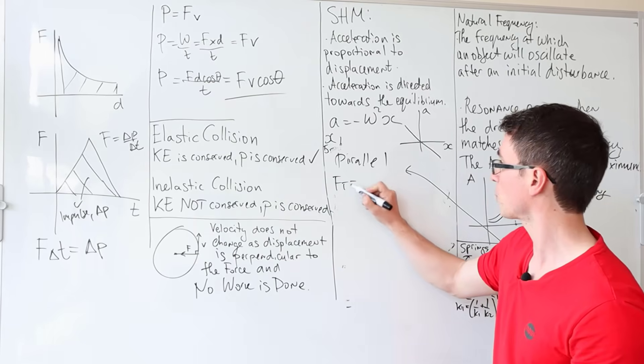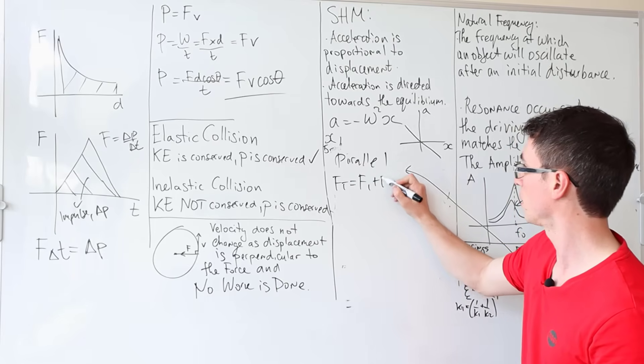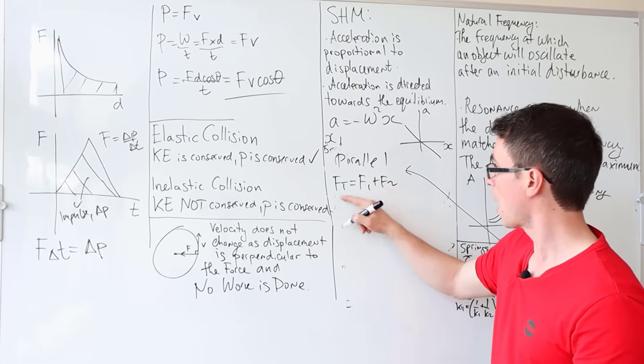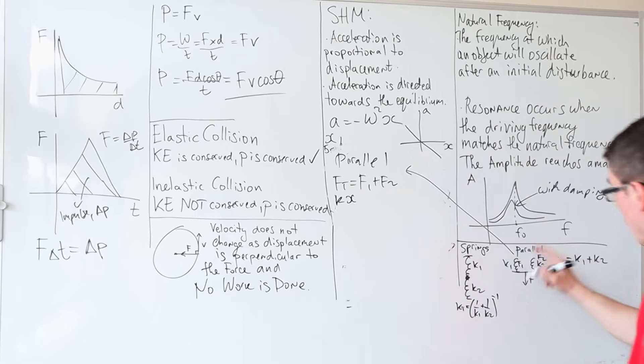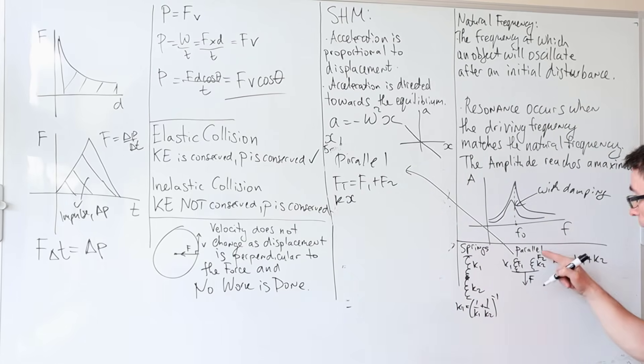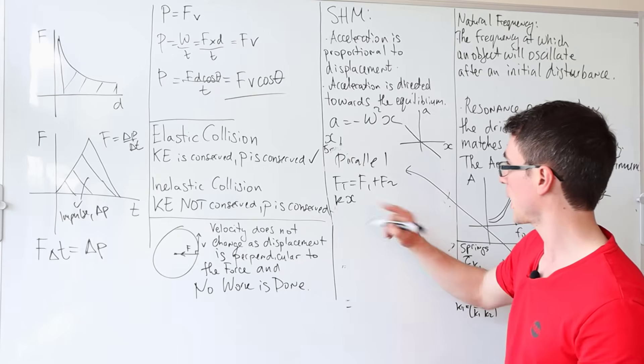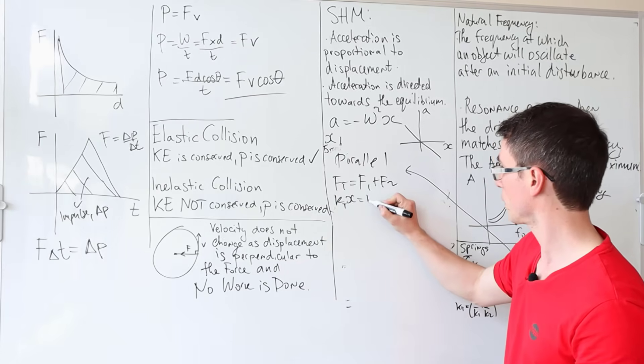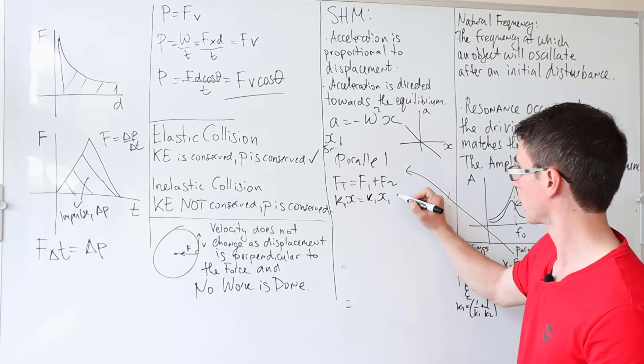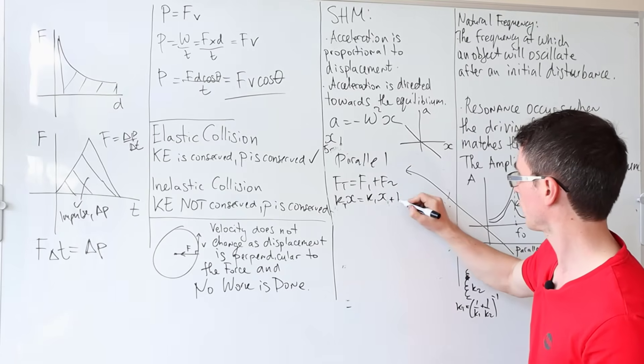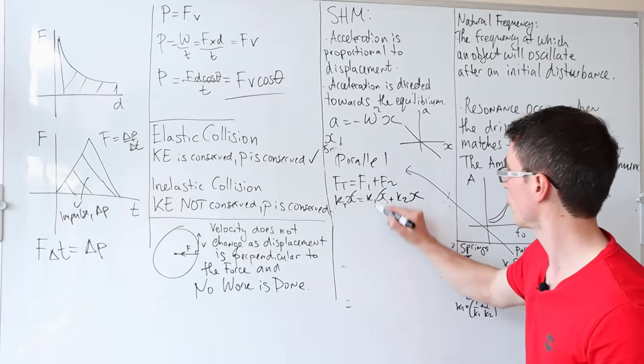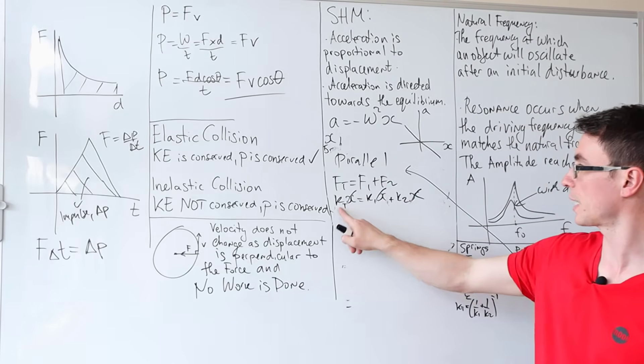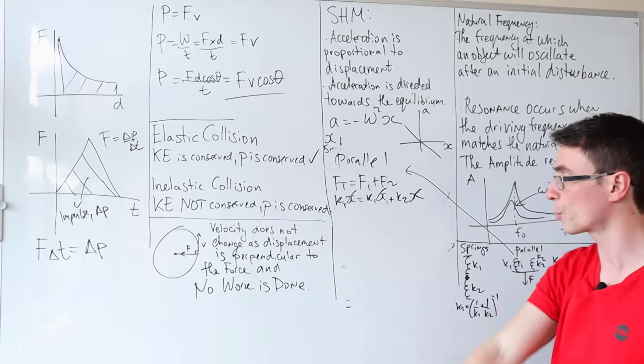F_total = F₁ + F₂. Because F = kx, they're all going to have the same extension. So k_total·x = k₁·x + k₂·x. As I said, they have the same extension, so we can just cancel those out, i.e., k_total = k₁ + k₂.